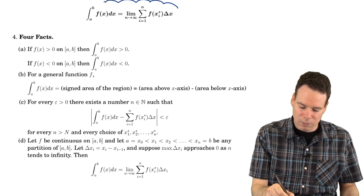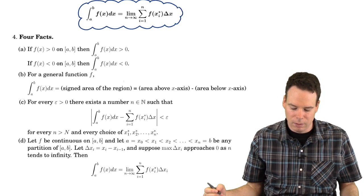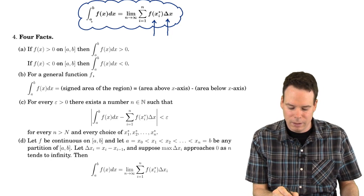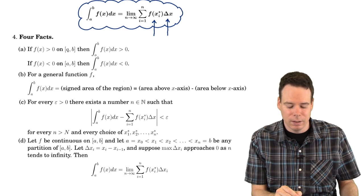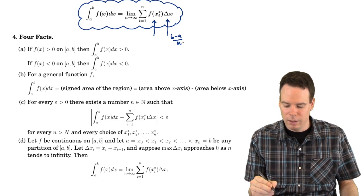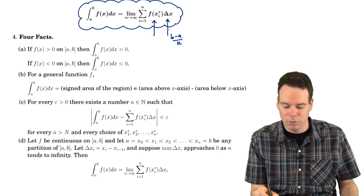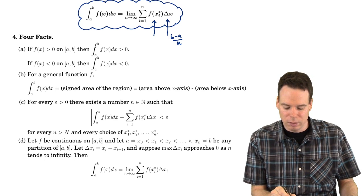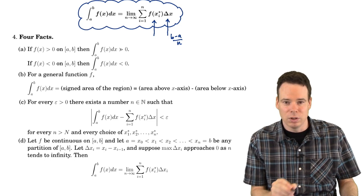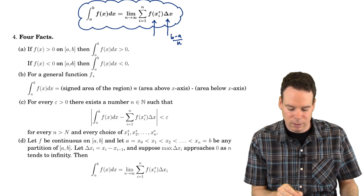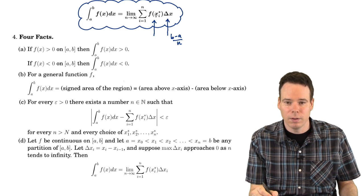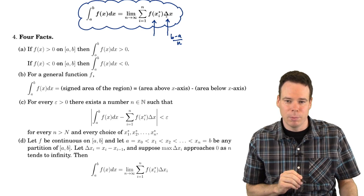Looking at a few properties of the definite integral: first, if the function is always positive and we integrate over a to b where b is bigger than a, then delta x — which is b minus a over n — is also positive. The product of two positive numbers is positive, the sum of positive numbers is positive, and taking the limit is still positive. So the integral of a positive function is positive. Conversely, if the function is negative, then the integral is negative.